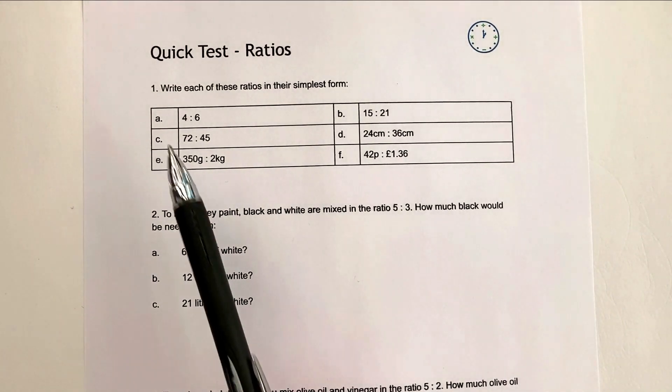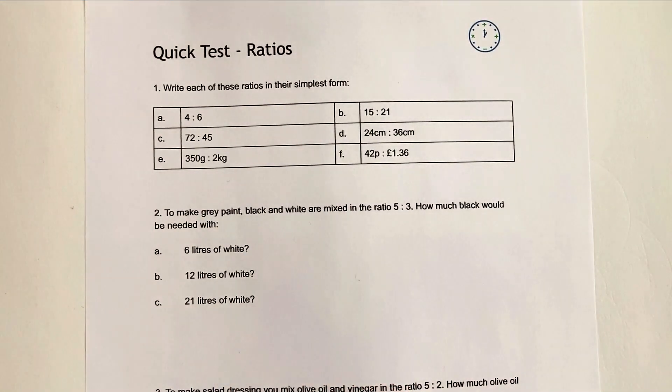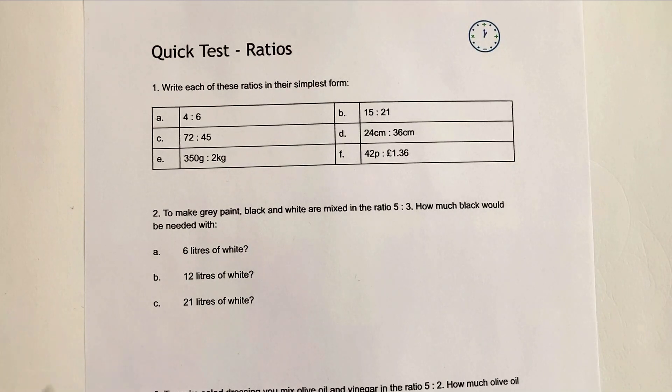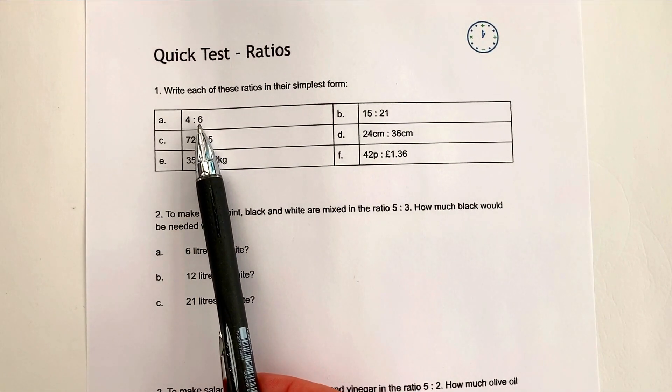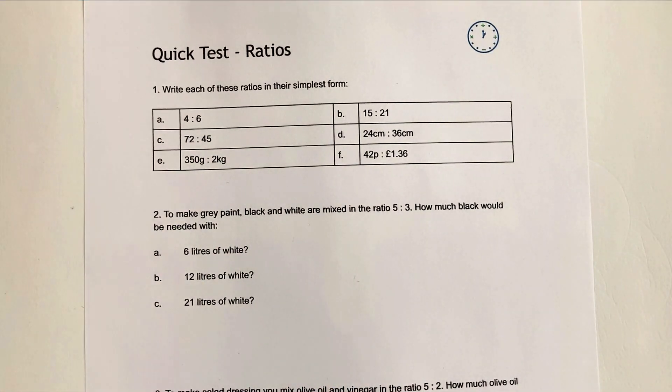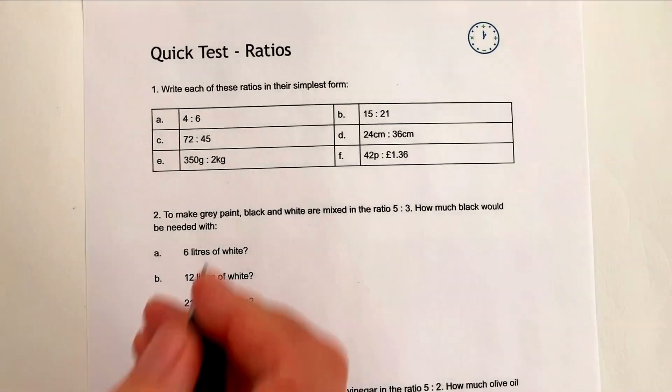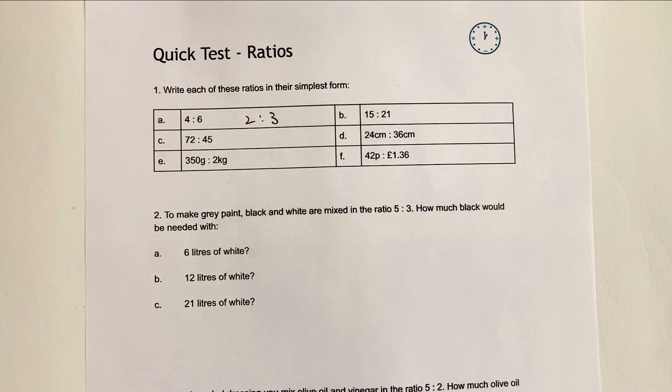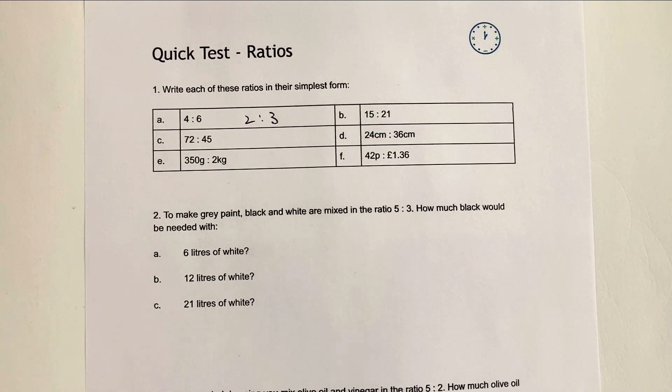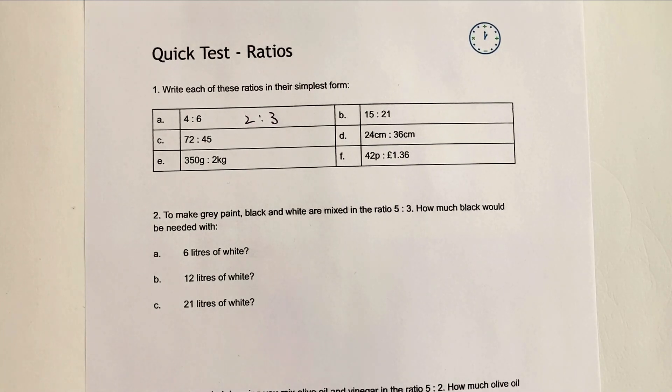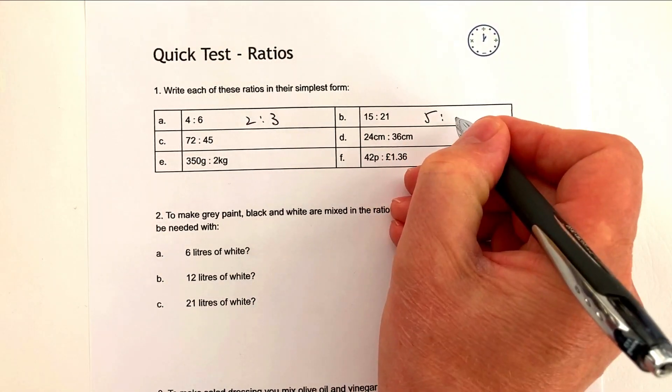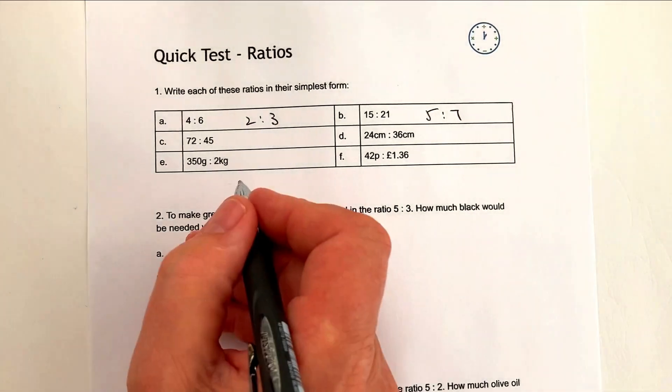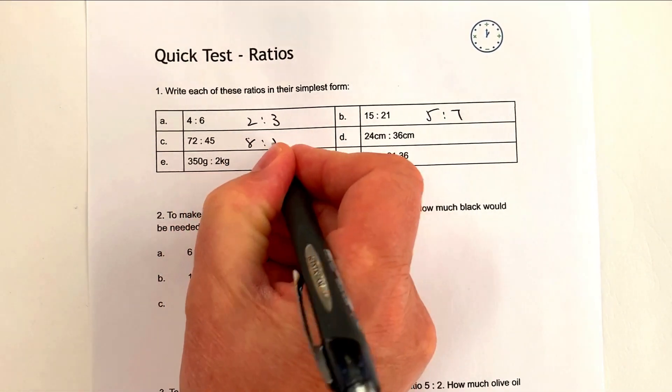Let's have a look at the first block. So we're writing each of these ratios in their simplest form. What we're basically looking for is the biggest number that will divide into 4 and into 6. So the largest number is going to be 2, it's called the highest common factor. So 4 divided by 2 is going to be 2 and 6 divided by 2 is going to be 3. Let's have a look at B. The largest number that will divide into both of them is going to be 3. So 3 into 15 is going to be 5 and 3 into 21 is going to be 7. 72 to 45, it's slightly trickier. It's actually going to be 9, so that's going to be 8 to 5. 24 to 36, the biggest number is going to be 12, so that's going to become 2 to 3.